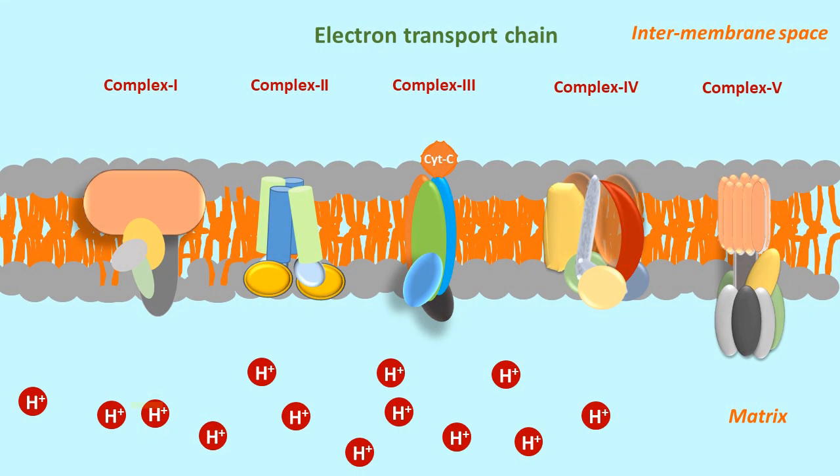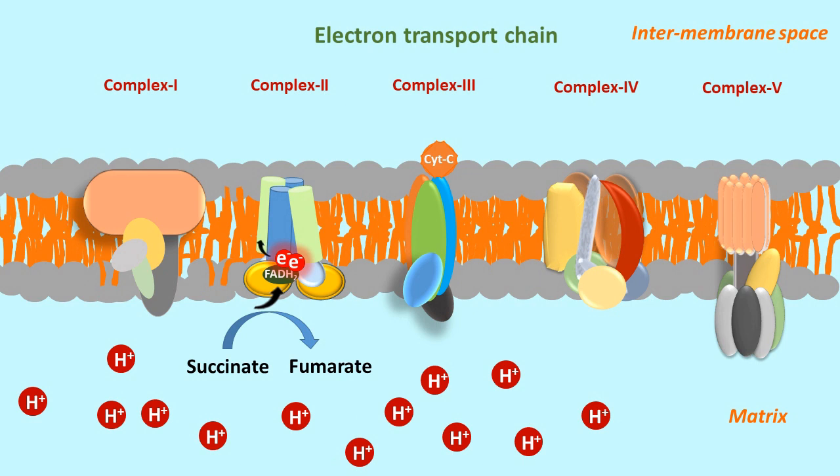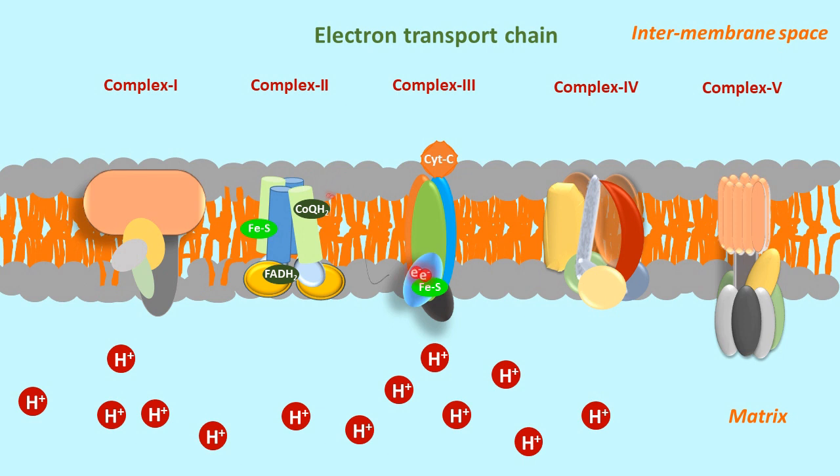Now, for reduced FAD molecules, complex 1 is skipped while complex 2, which is succinate coenzyme Q reductase, is in action. The enzyme succinate dehydrogenase that catalyzes conversion of succinate to fumarate is an integral component of complex 2. This is the reaction of citric acid cycle that reduces FAD into FADH2 by donating 2 electrons which lose their electrons to iron sulfur cluster of complex 2. Finally, the electrons are transferred to coenzyme Q associated with complex 3.